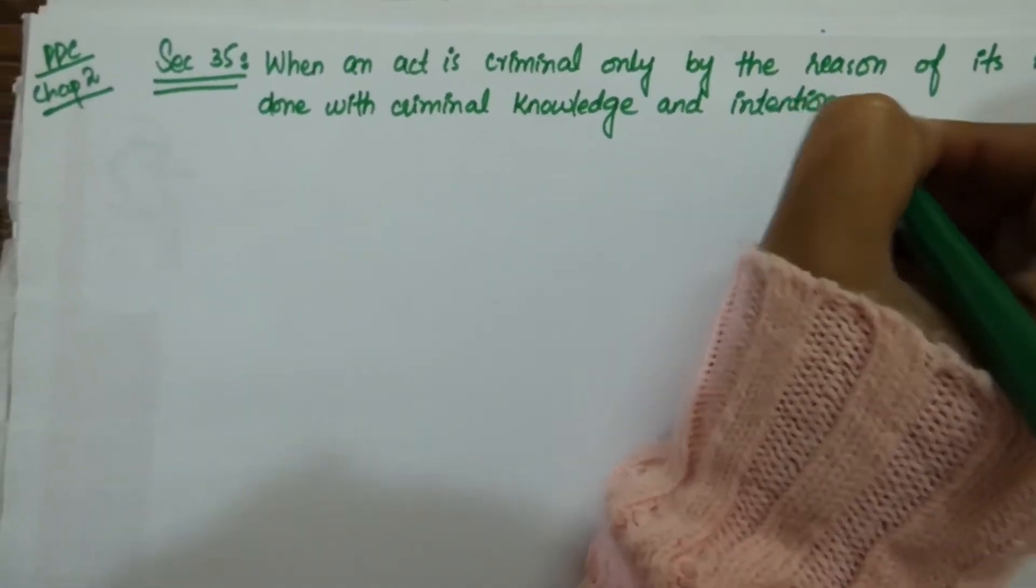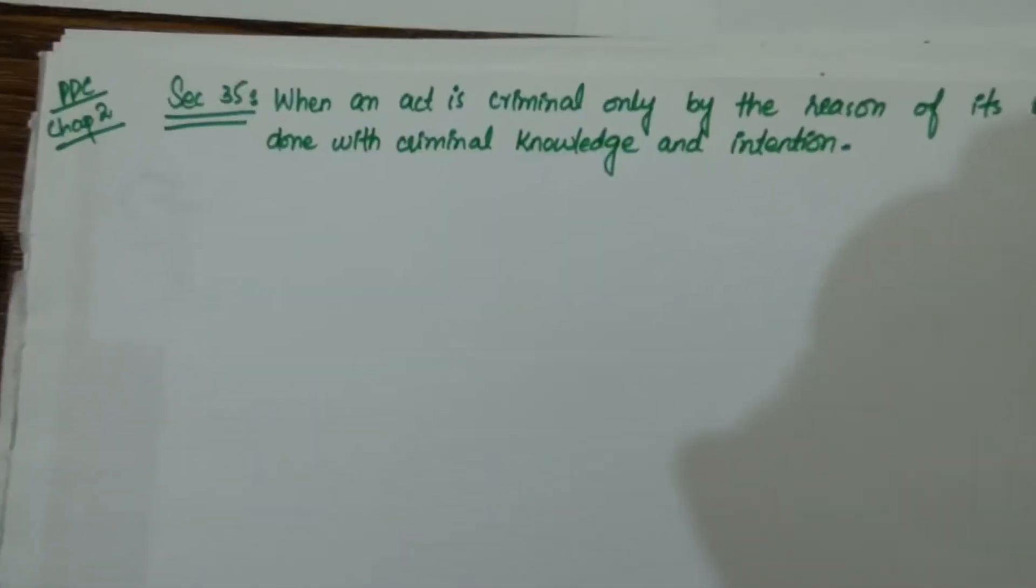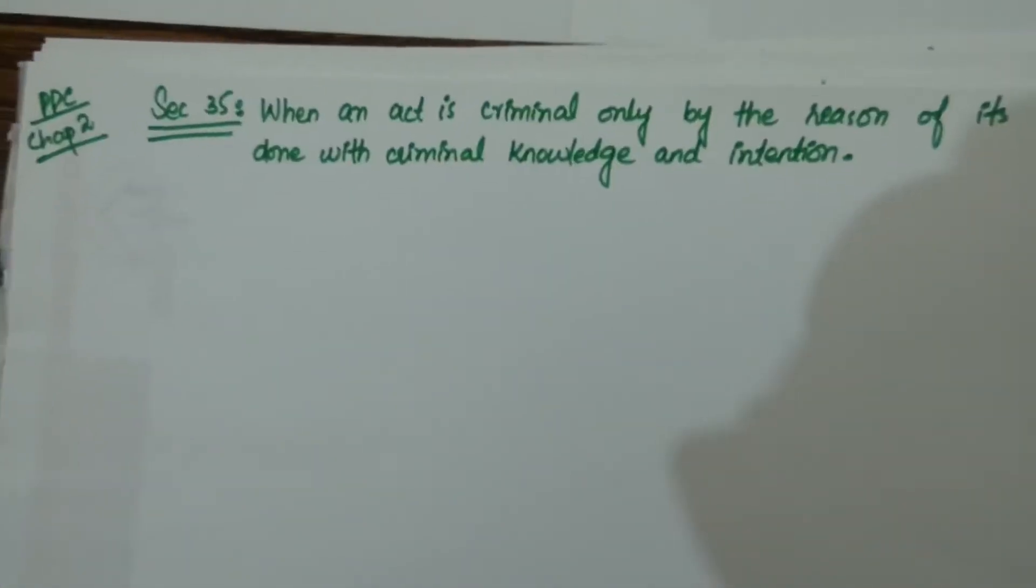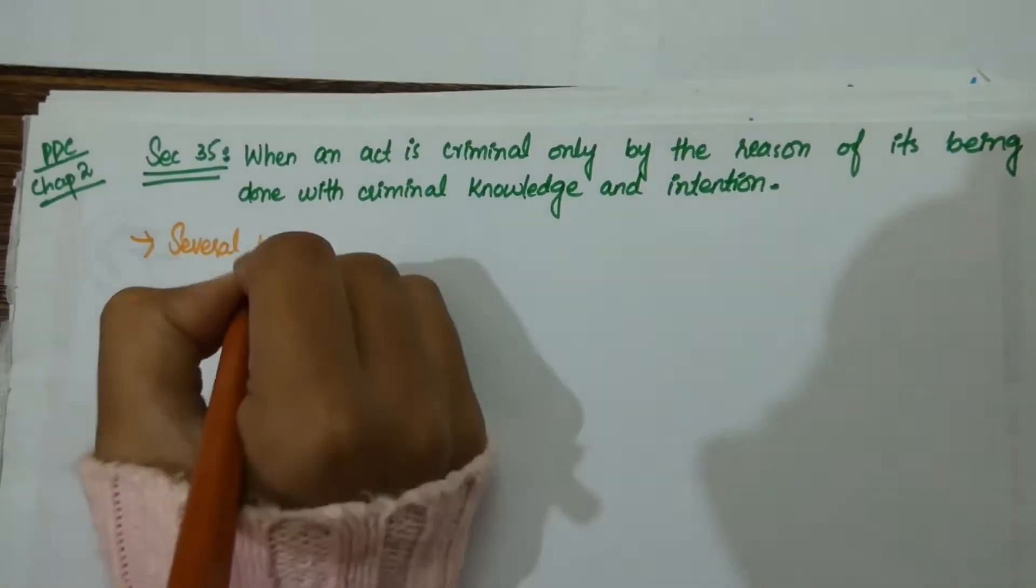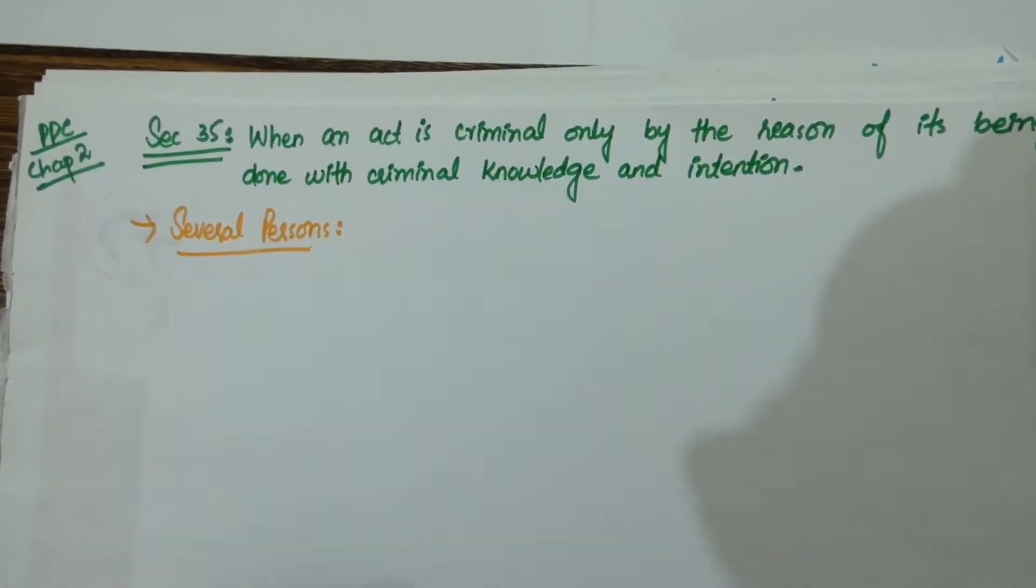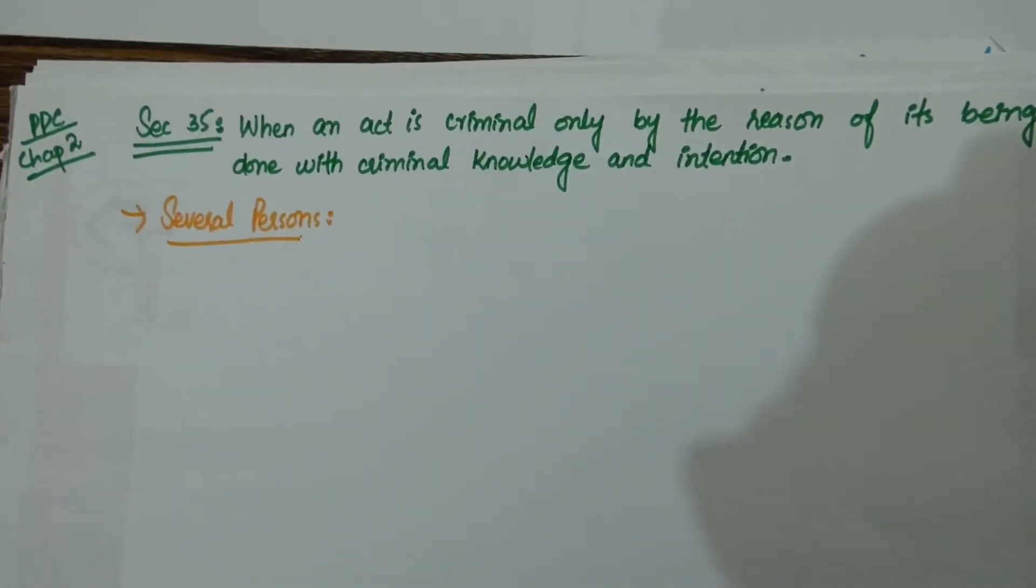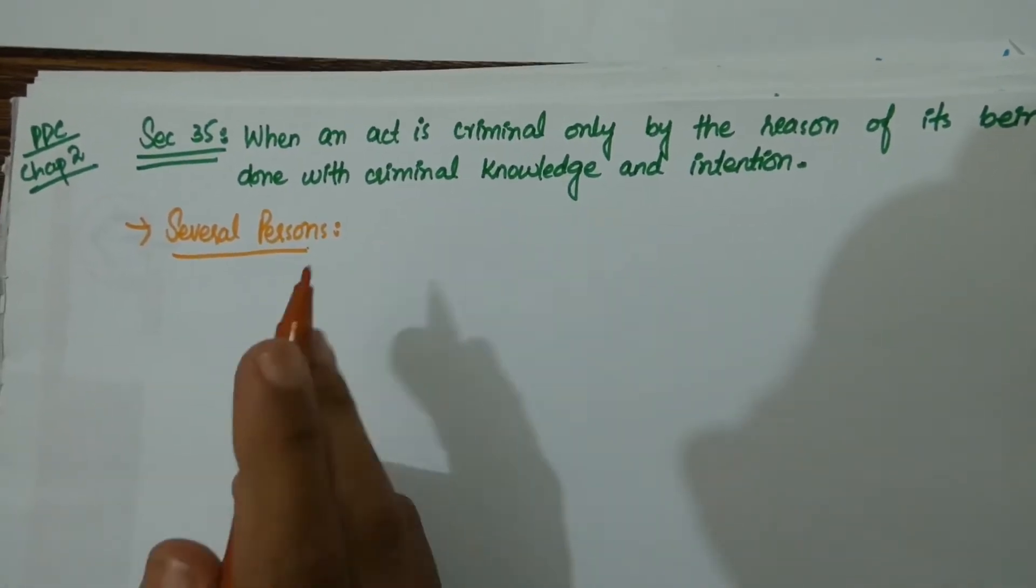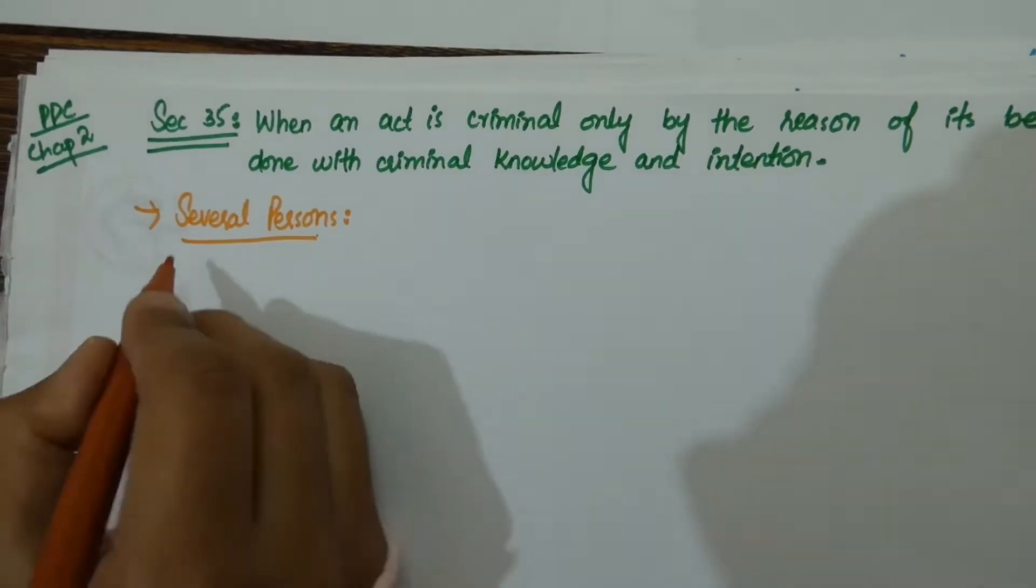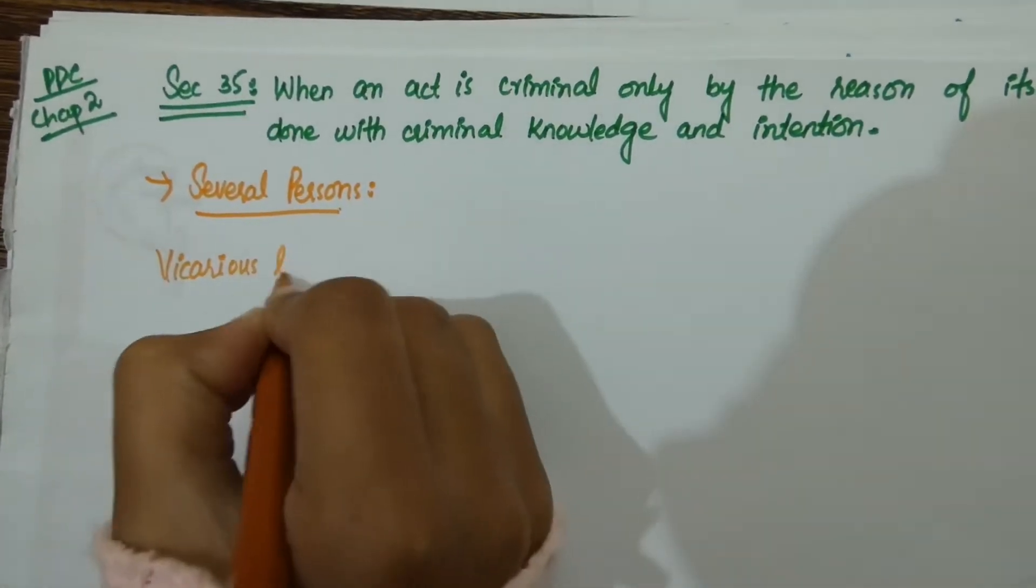If we look at the bare language of this section, Section 35 says whenever an act which is criminal only by the reason of its being done with criminal knowledge or intention is done by several persons, each of such person who joined the act is liable in the same manner as if the act were done by him alone.